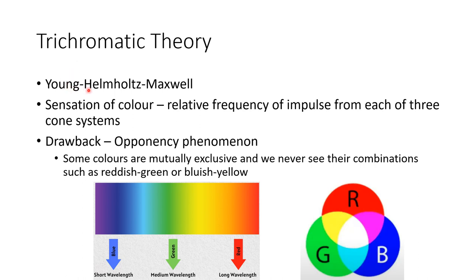It was proposed by Young, Helmholtz, and Maxwell. As the name indicates, there are three primary colors — red, green, and blue — and a combination of these three colors will give all colors. Basically, this theory states that the sensation of color is because of the relative frequency of impulses from each of three cone systems: S, M, and L cones. The drawback of this theory is the opponency phenomenon — that is, some colors are mutually exclusive and we never see their combinations, such as reddish green or bluish yellow.